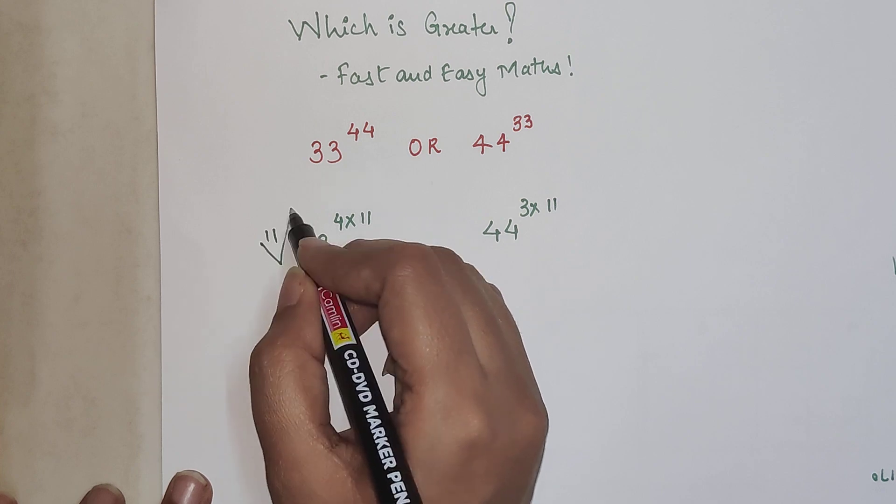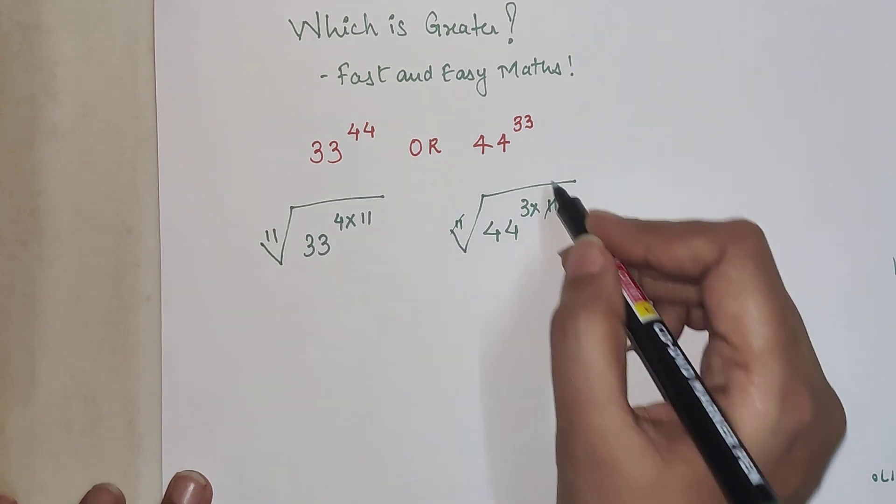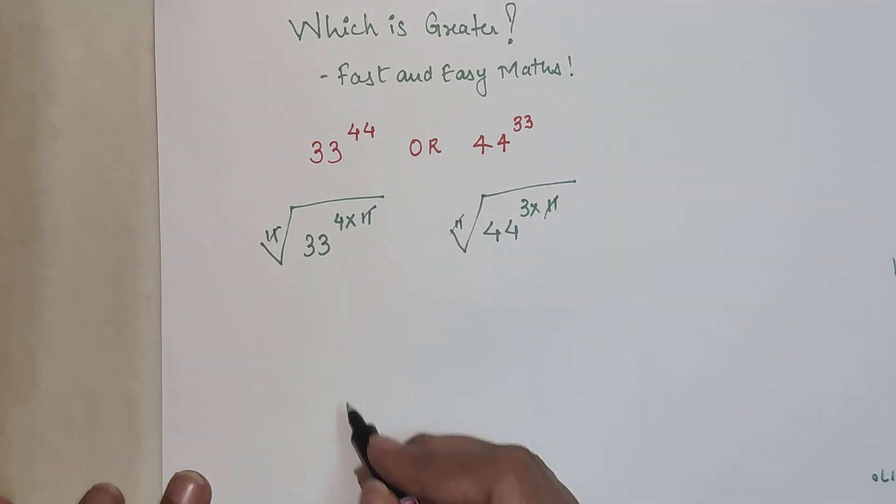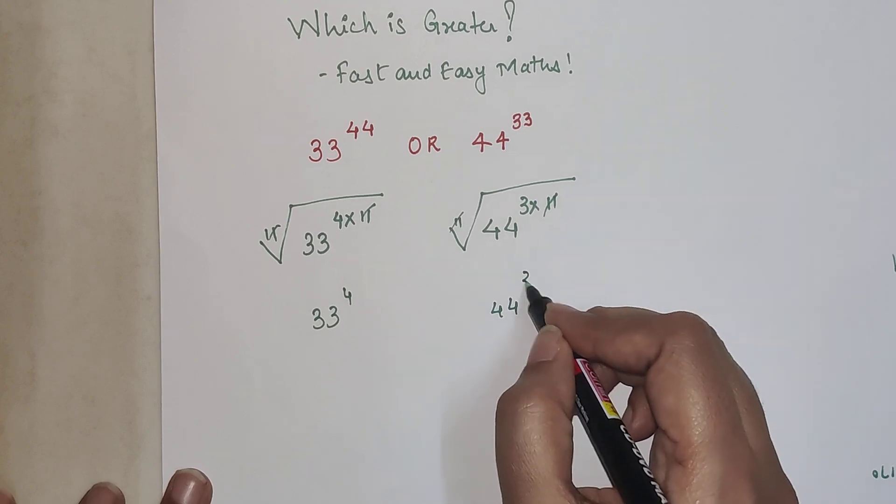Now taking the 11th root on both sides, the root gets cancelled. So we are left with 33 raised to 4 and 44 raised to 3.